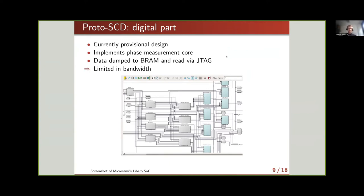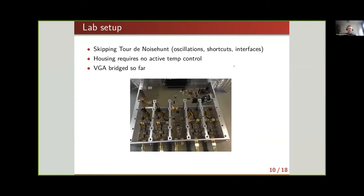For the digital part, we began with a very provisional design just to read out and characterize the analog front end. This provisional digital back end reads out the incoming data with just PLLs and pilot tone correction, and dumps data into BRAM, read out via JTAG. It's not the final version and has limited bandwidth, but it served its first purpose, allowing us to characterize the prototype.